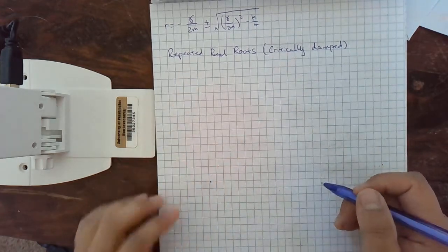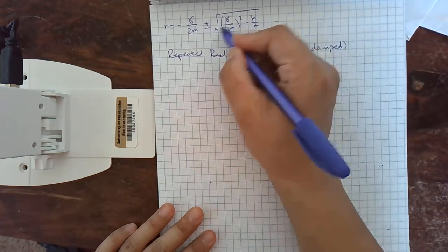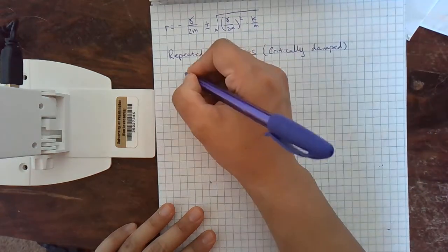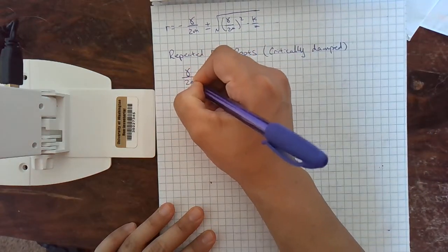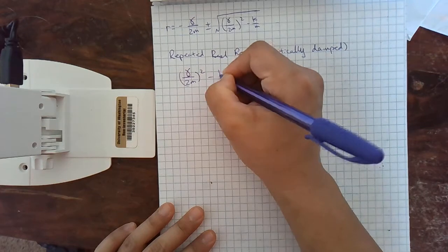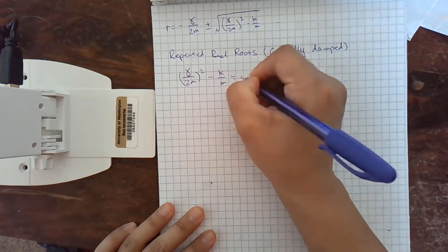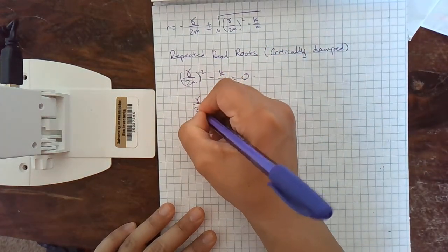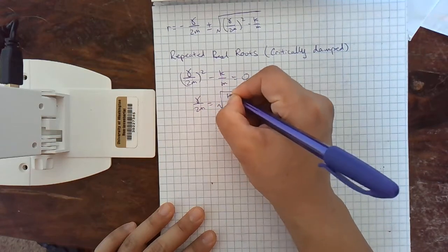So this is what happens when we have repeated real roots. How do we get repeated real roots? We need the thing under the square root to be zero. So gamma over 2m squared minus k over m equals zero. So gamma over 2m equals the root of k over m.